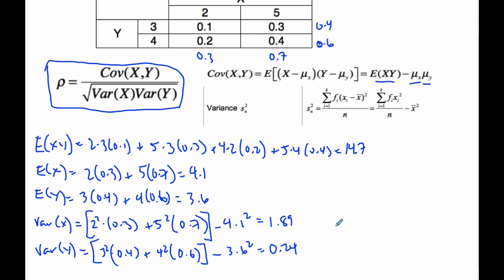Now we're ready to put it all together. ρ equals 14.7, which is the expectation of XY, minus 4.1 times 3.6—these two expectations—divided by the square root of the variance of X, 1.89, times the variance of Y, which is 0.24.